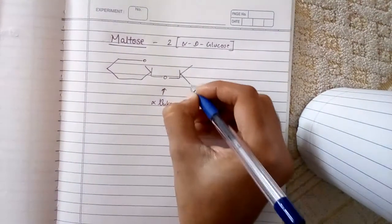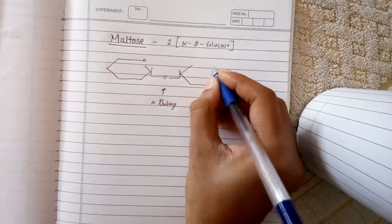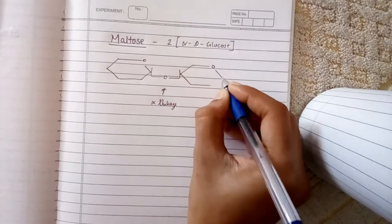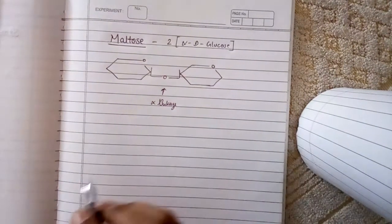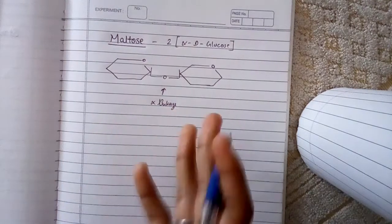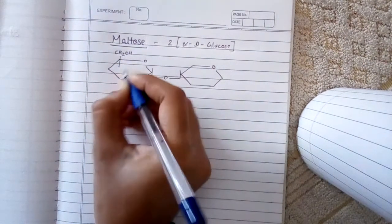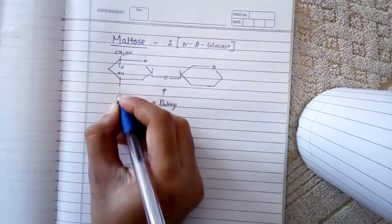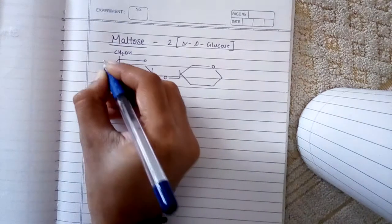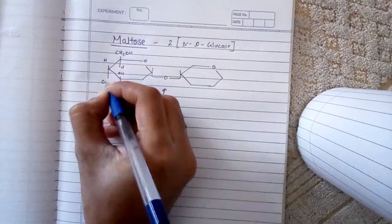And next is another alpha D-glucose. This is pyran. So let's make it. Alpha D-glucose, this is CH2OH. Here we have H, OH, H. You know this series from my earlier videos, right?